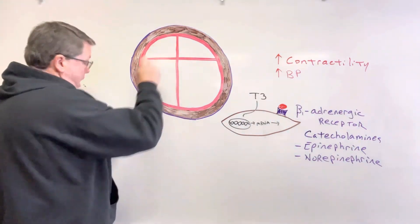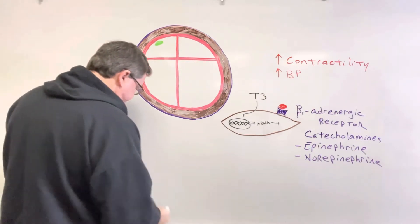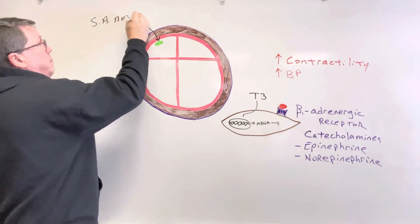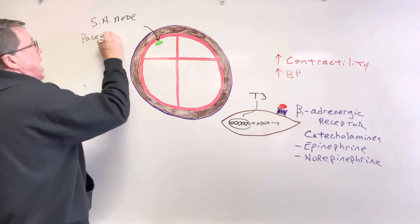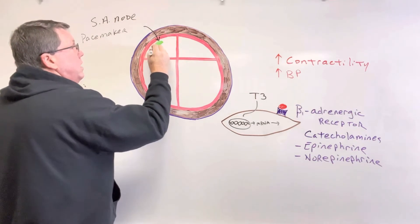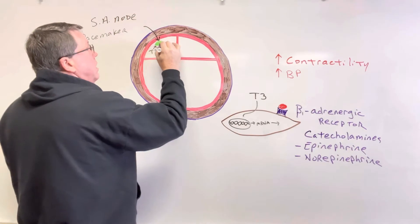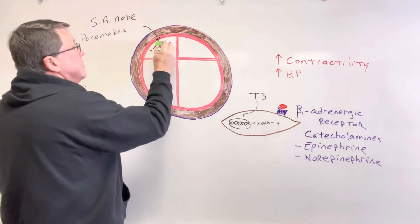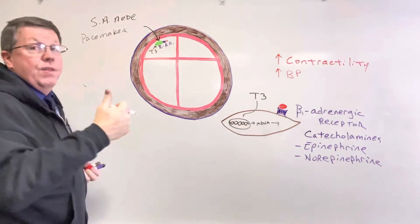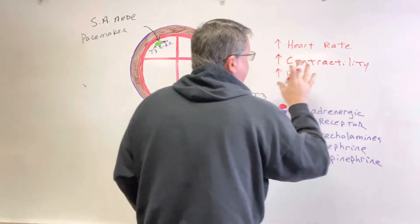Up here in my right atrium, we have something called the SA node — the sinoatrial node — which is the pacemaker of the heart. The same thing that we saw happens here will happen there. My T3 is going to come in and put more of those beta-1 adrenergic receptors on the SA node. Then my catecholamines are going to bind onto there, and what that's going to do is increase the heart rate — also known as my pulse.